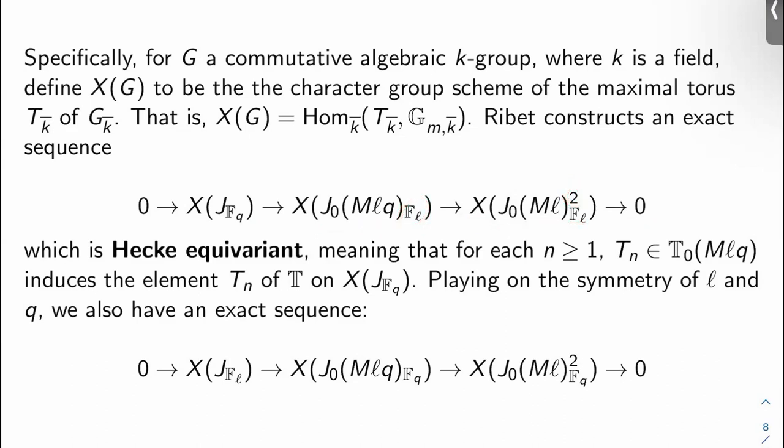so the Hecke operator in T_0 at level Mℓq induces the actual element T_n of T we just talked about above on X(J_q) here. So T_n here induces the T_n down here. That's what Hecke equivariant means. Now you have this symmetry between ℓ and q in the level, right? So you should be able to make another exact sequence just like this by swapping all the q's and the ℓ's, and so we do that. We have that as well. So this is, I'll call this Ribet's first exact sequence and this Ribet's second exact sequence from here on out.